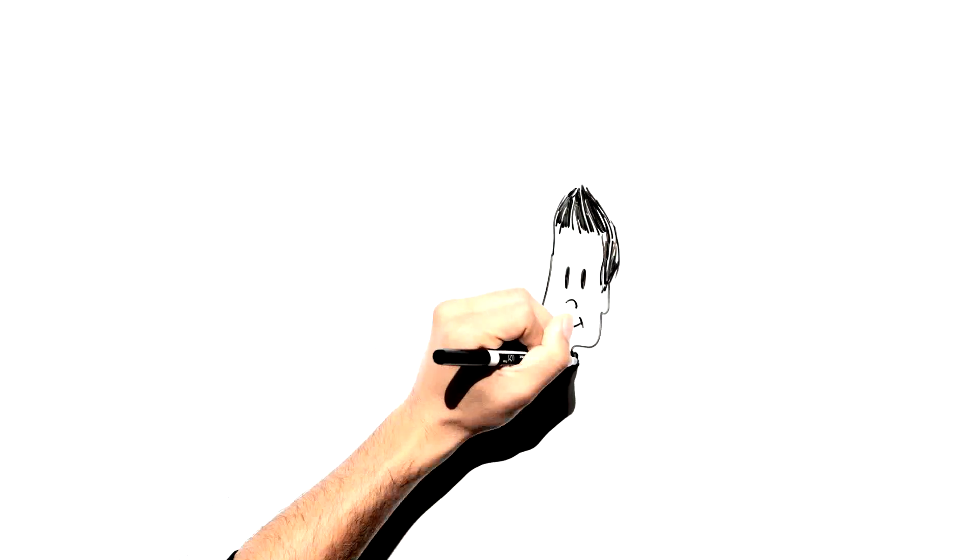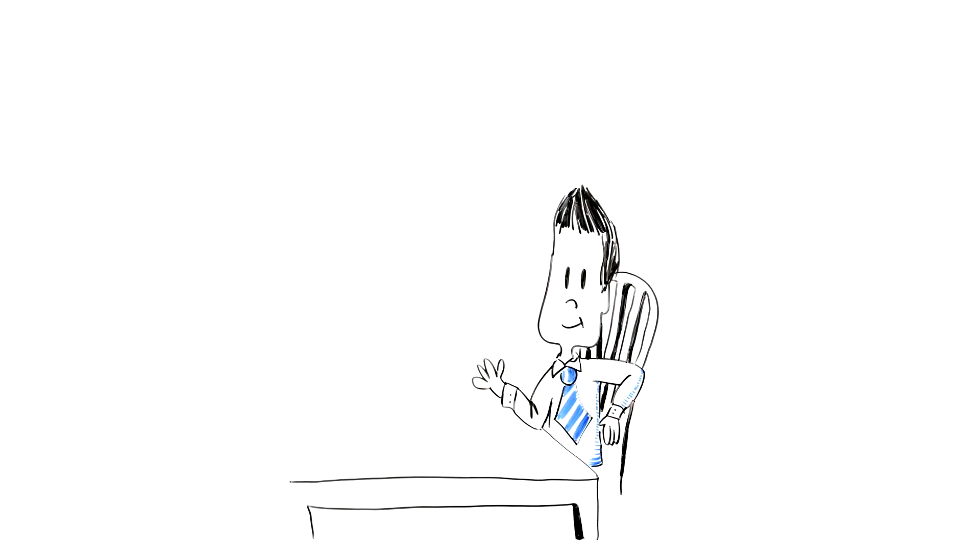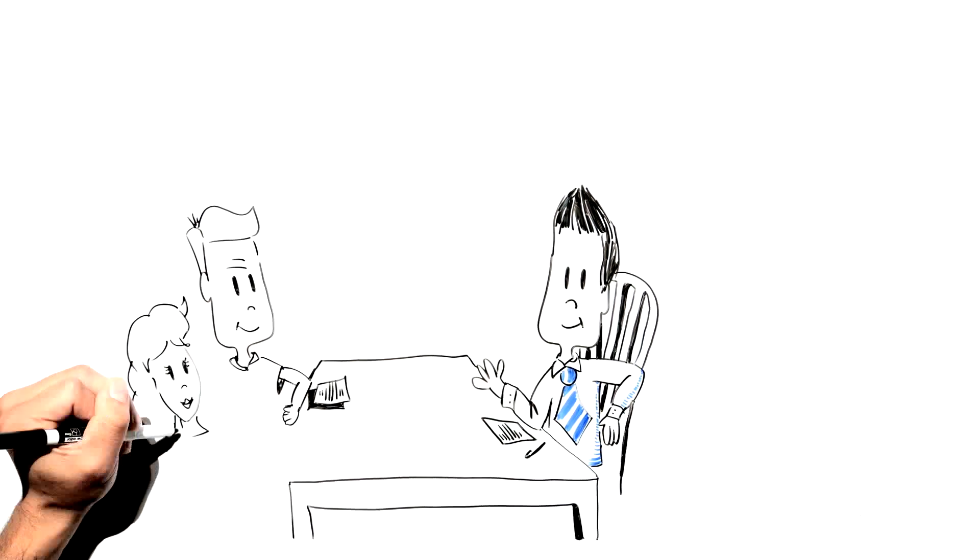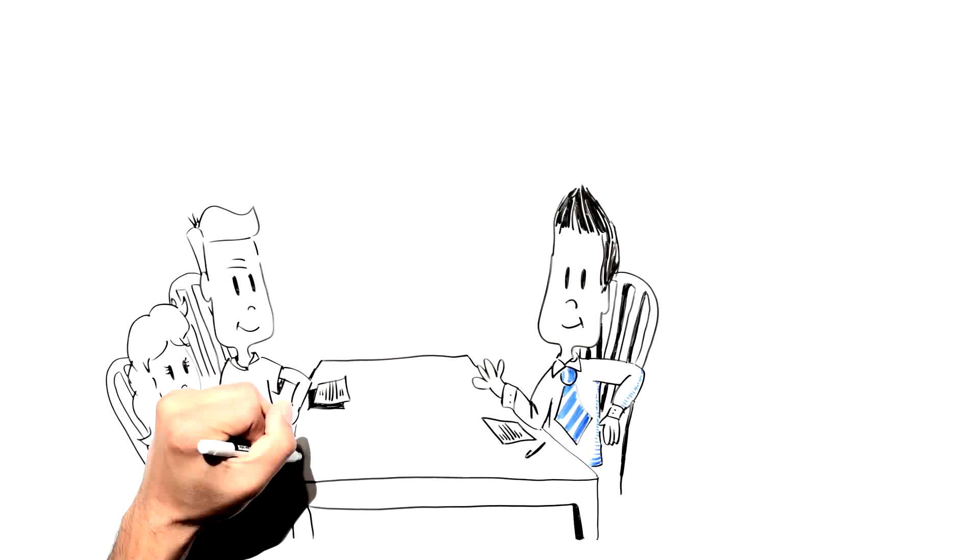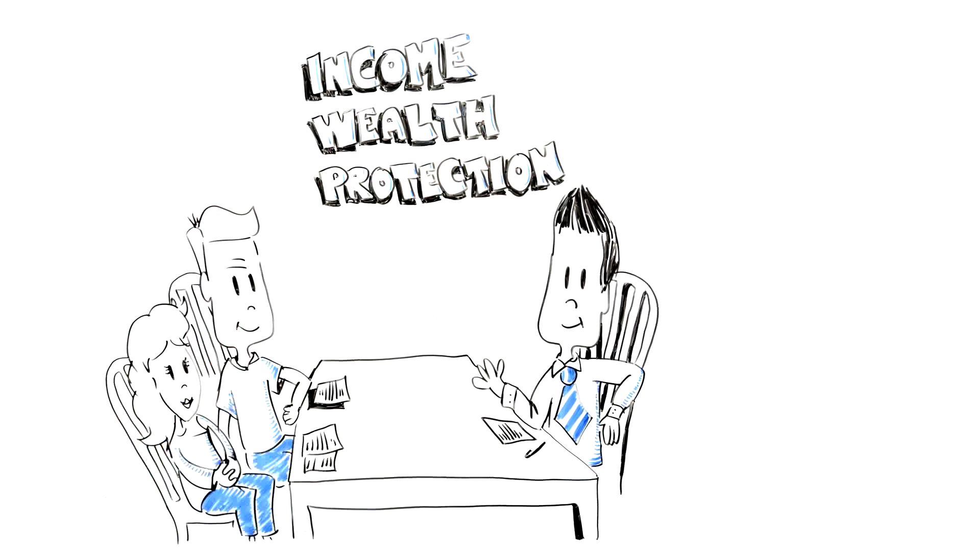Money for Life is working with an advisor to get ready for retirement. Your advisor can help you plan for your retirement needs and the risks you'll face by choosing the right mix of income, wealth, and protection solutions.